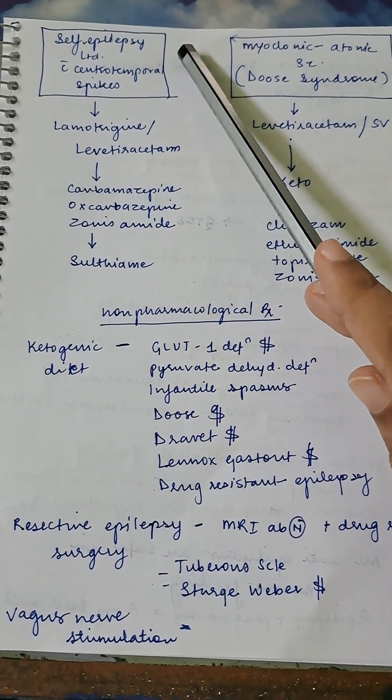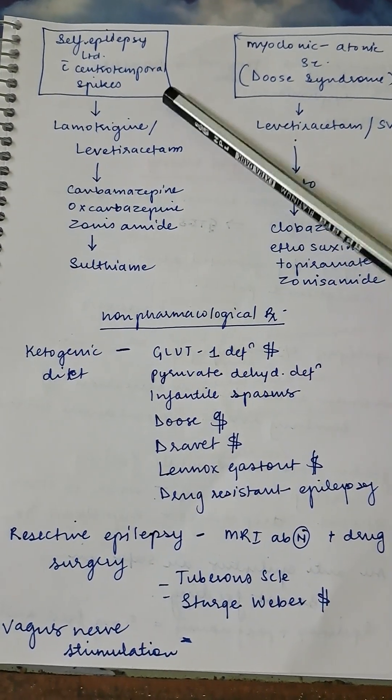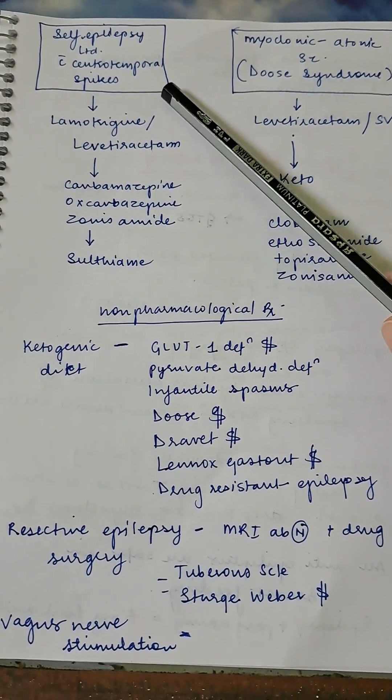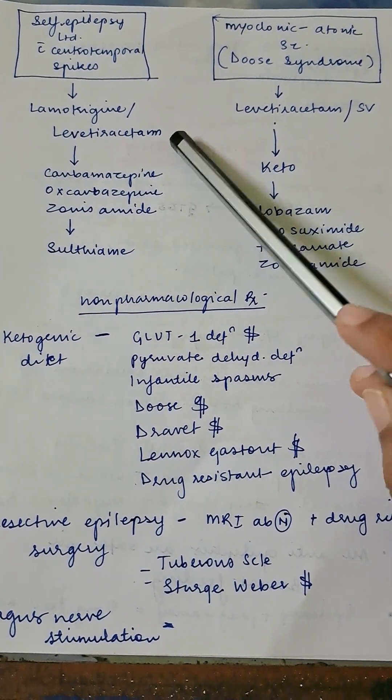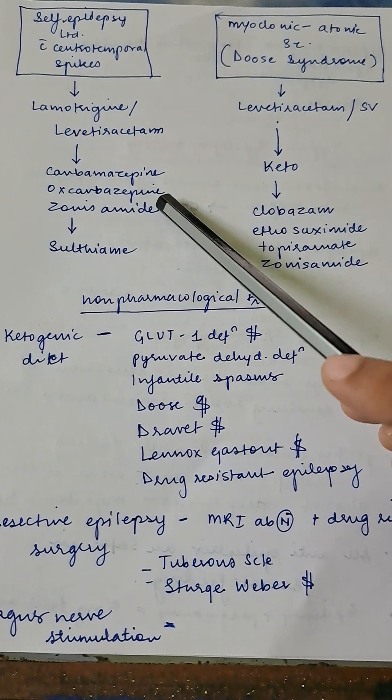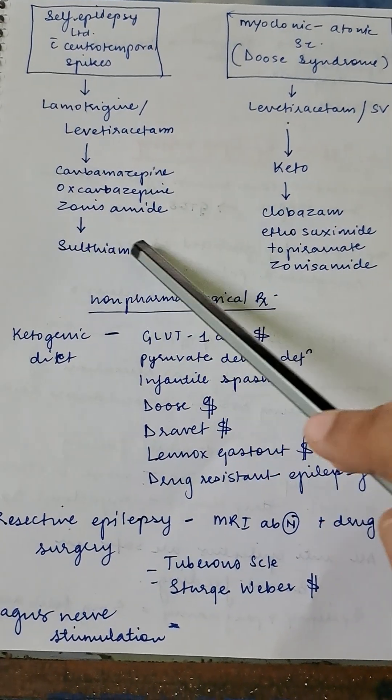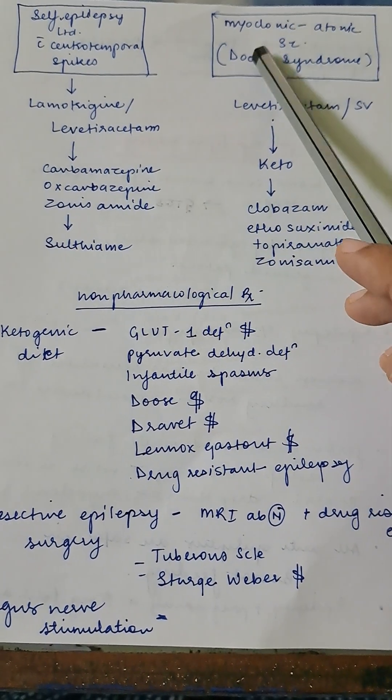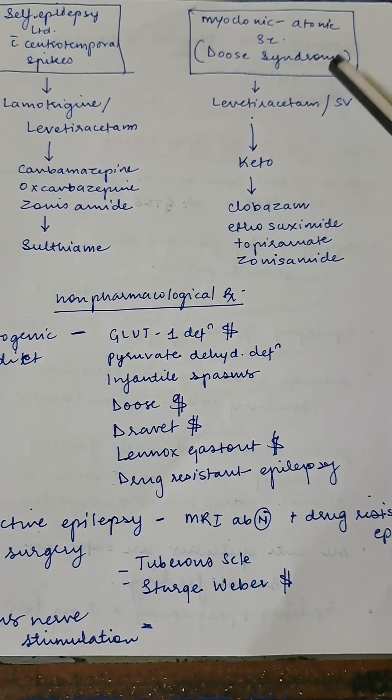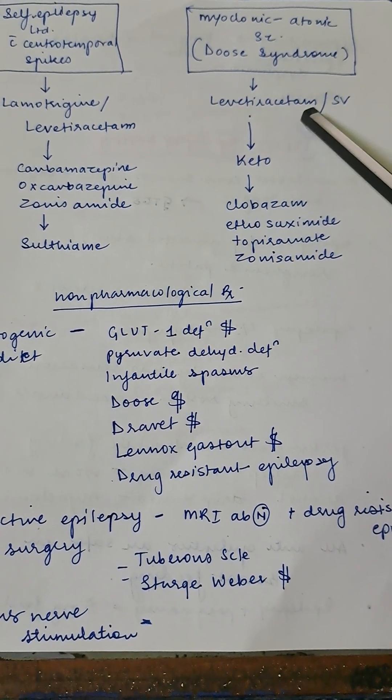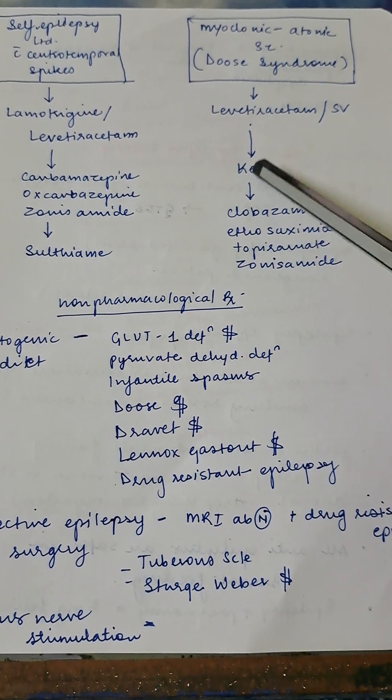Self-limited epilepsy with centrotemporal spikes: in this case, this is very rarely asked, hardly asked, but still—lamotrigine or levetiracetam, then you can give carbamazepine, oxcarbazepine, zonisamide. And this is a new drug called sultiame. Myoclonic-atonic seizure, also known as Doose syndrome: here you will start with levetiracetam or sodium valproate. If this does not work, then ketogenic diet, then clobazam, ethosuximide, topiramate, zonisamide.